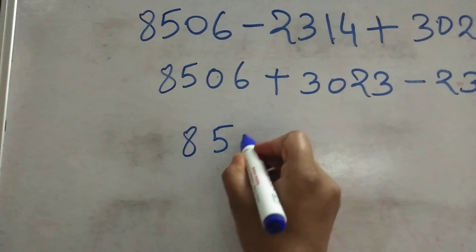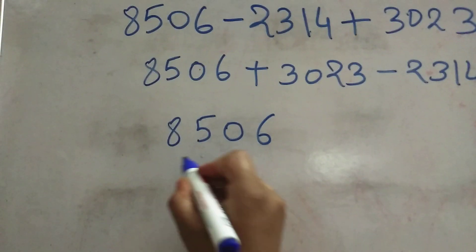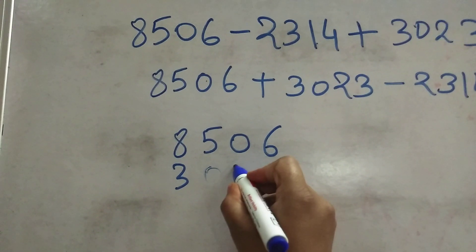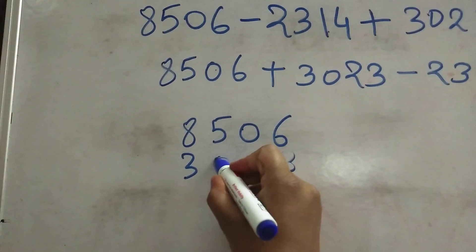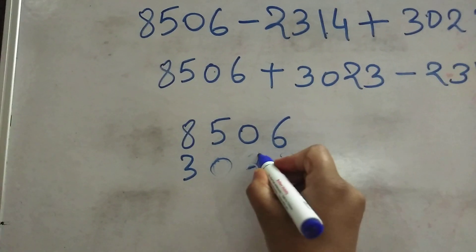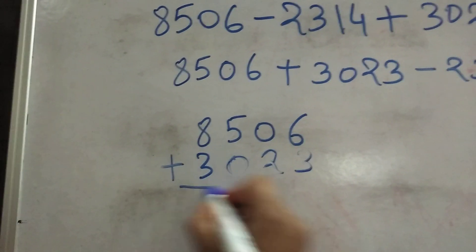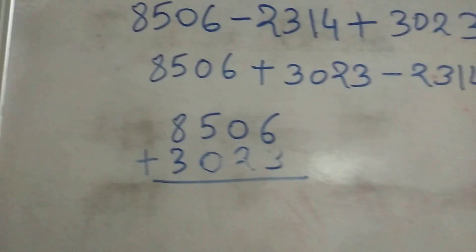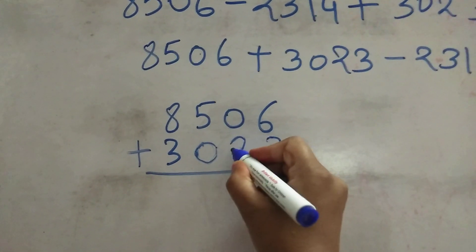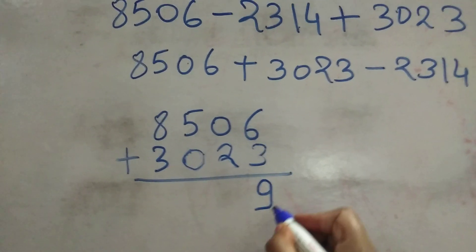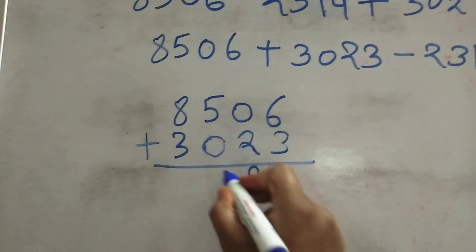8506, 3023. OK, now we will add these numbers. 6 plus 3 is 9, 2 plus 0 is 2, 5 plus 0 is 5, 8 plus 3 is 11.